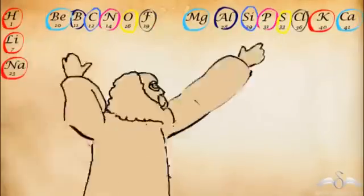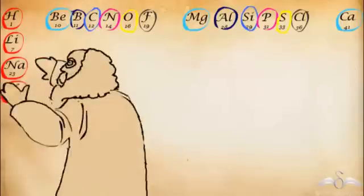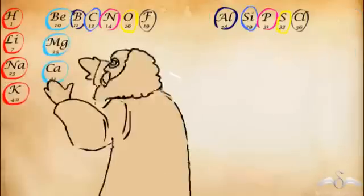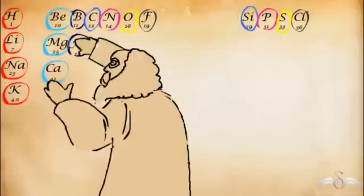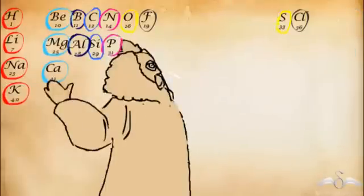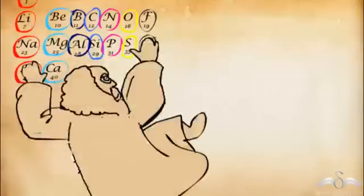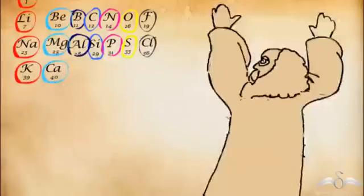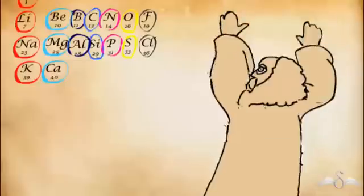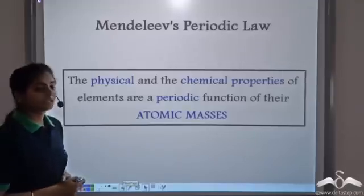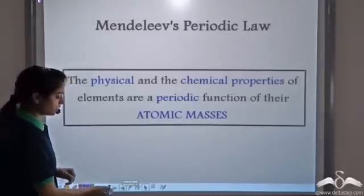Further, he brought the elements with similar properties one below the other, and finally arranged them in increasing order of atomic mass. He was very happy with his work. Now, based on this, Mendeleev had given his periodic law.